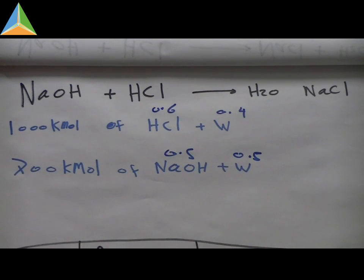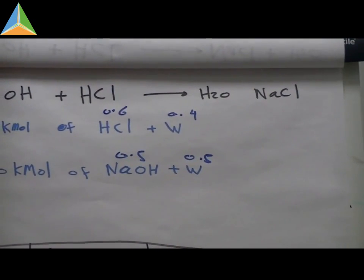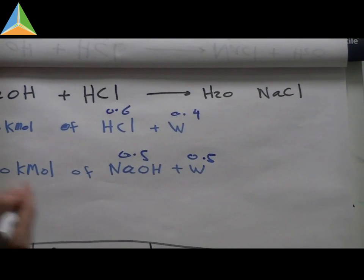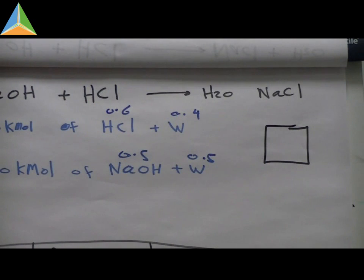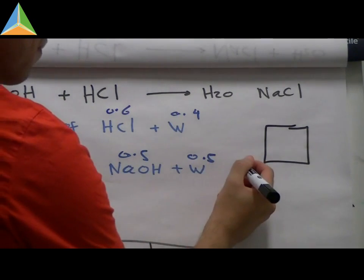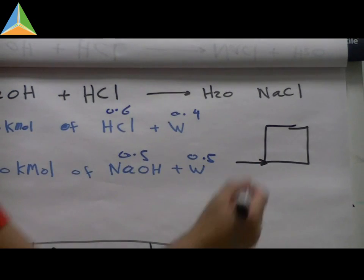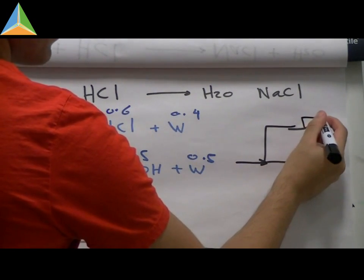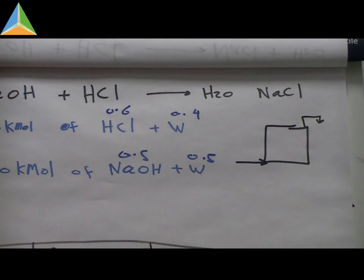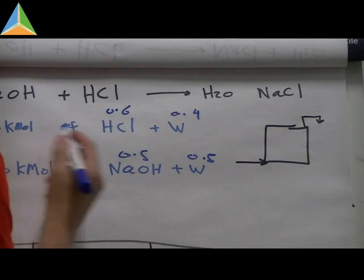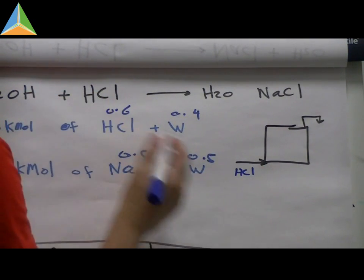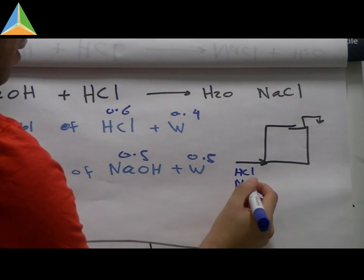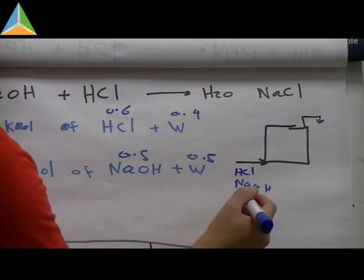First, to solve this type of question, just draw a flow diagram to organize your ideas and clues. This is the system — there is an input. What we've got coming in: HCl, NaOH, and water.